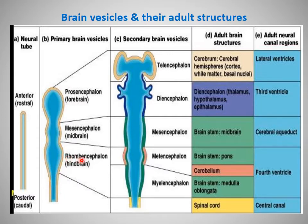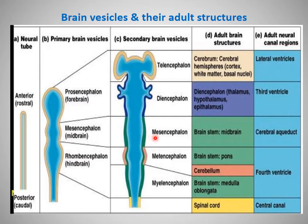Three primary brain vesicles are formed during the third week: the rhombencephalon or hindbrain, the mesencephalon or midbrain, and the prosencephalon or forebrain. Later, during the fifth week, these primary vesicles give rise to secondary brain vesicles. The rhombencephalon gives rise to the metencephalon and myelencephalon; the mesencephalon remains undivided; and the prosencephalon divides into the telencephalon and diencephalon, giving five secondary brain vesicles.